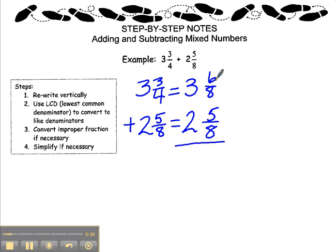We're adding here, so 6 plus 5 is 11 eighths. 3 plus 2 is 5, giving us 5 and 11 eighths.